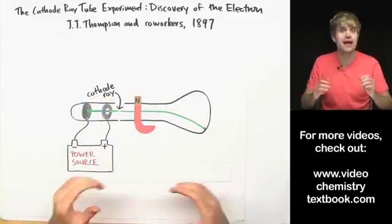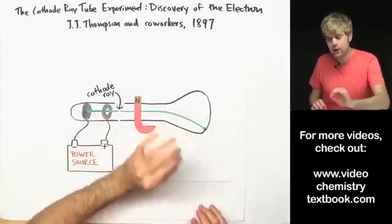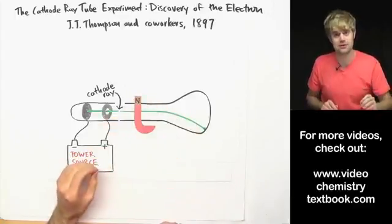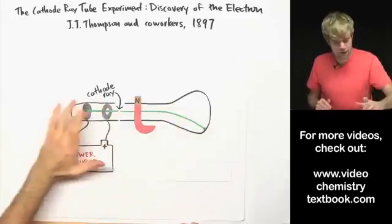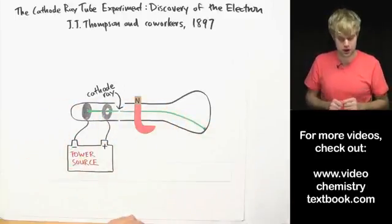Now if the cathode ray is indeed negatively charged, this is exactly how he would expect it to move in the presence of a magnet like this. So this is just further confirmation that whatever makes up the cathode ray probably is negatively charged.